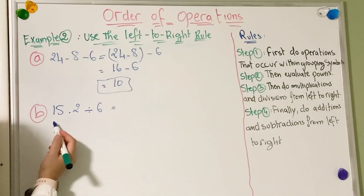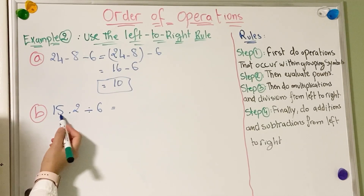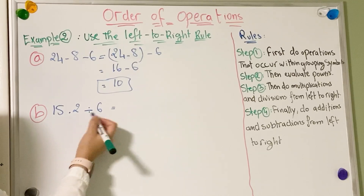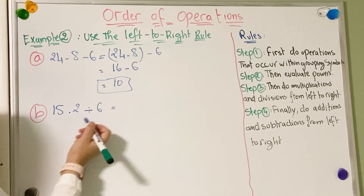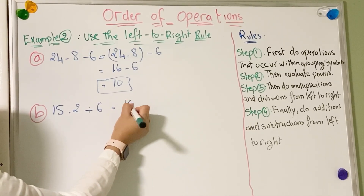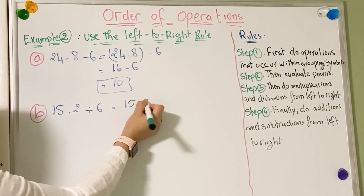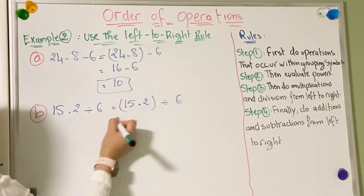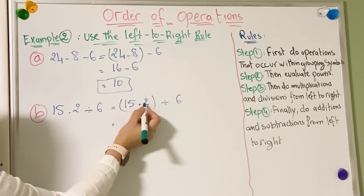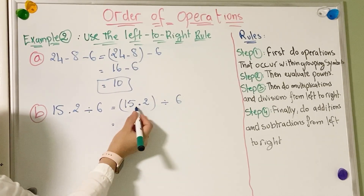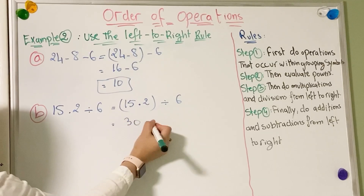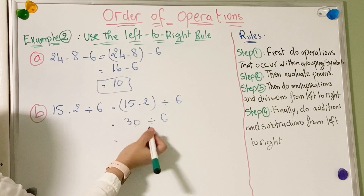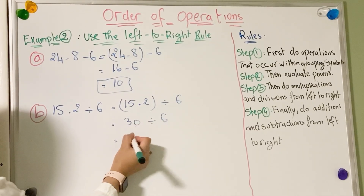Now let's look at a different example: 15 × 2 ÷ 6. Working from left to right, we first calculate 15 × 2 = 30, then 30 ÷ 6 = 5.